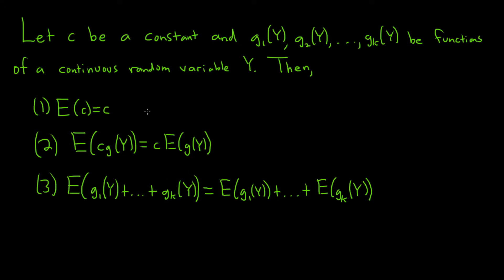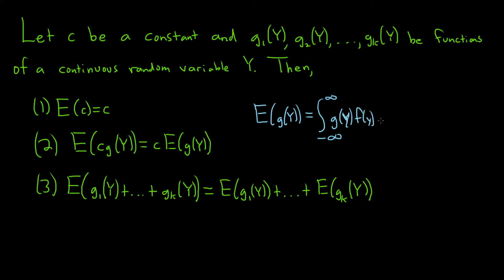In this problem, we have to prove all three of these things. To do that, we're going to use a previous theorem. If you have the expected value of a function of a random variable, which we'll call Y, and you want the expected value of this, this is equal to the improper integral from negative infinity to infinity of g of y times f of y dy — where little f is the density function of our random variable.